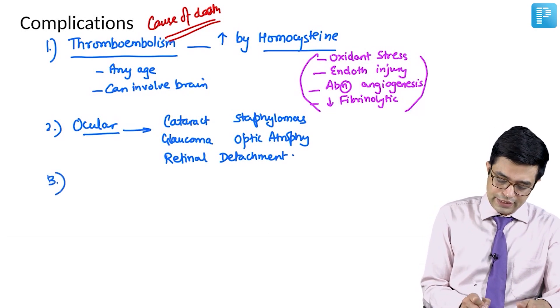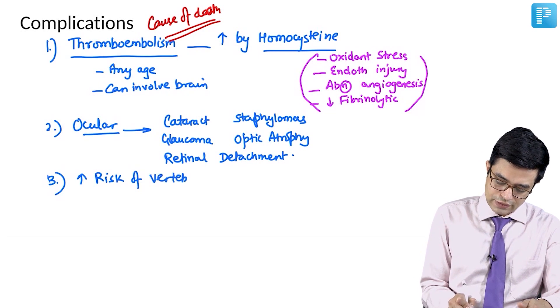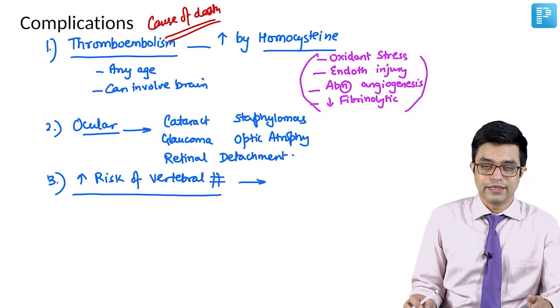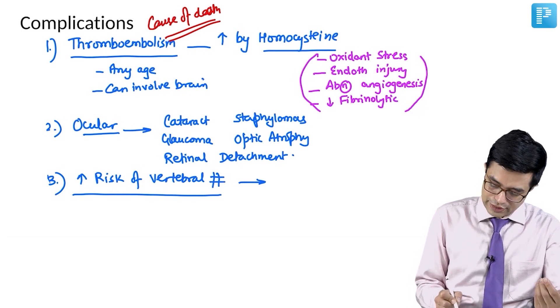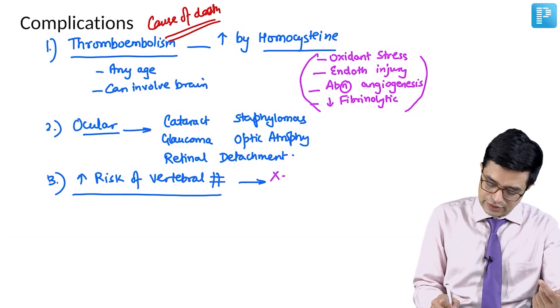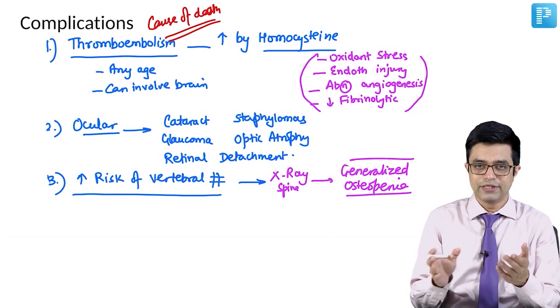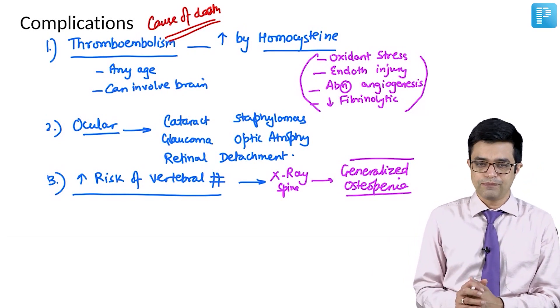Thirdly, there is an increased risk of vertebral fractures. This point is not mentioned in Nelson, but it is an important point to remember because the Nelson does accept that most of these children, if you do x-ray spine, it will show generalized osteopenia. Osteopenia is present even in the childhood. As age advances, osteopenia becomes severe and in mid-adulthood, if they do survive till that time, they will have vertebral fractures causing paraparesis and paraplegia.